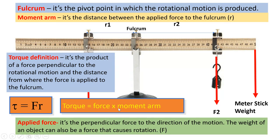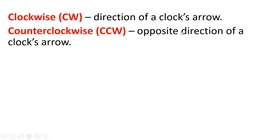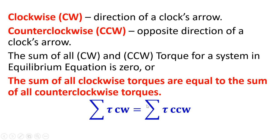The unit for force is newtons, and the SI unit for moment arm is meters, so the unit for torque is newton-meters. Clockwise is represented by CW, the direction a clock moves. Counterclockwise, CCW, is the opposite direction. For a system in equilibrium, the sum of all clockwise and counterclockwise torques equals zero — in other words, the sum of all clockwise torques equals the sum of all counterclockwise torques, as stated by the torque equilibrium equation.